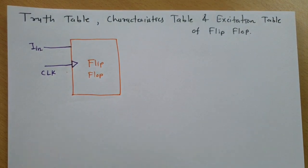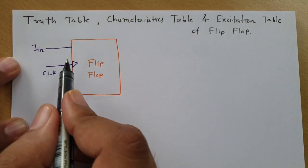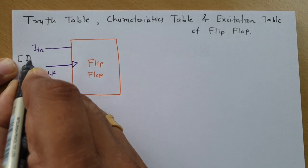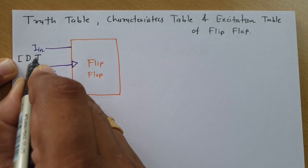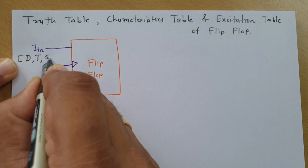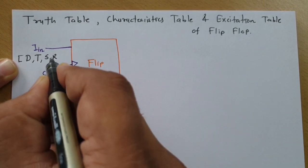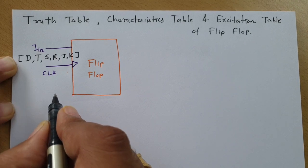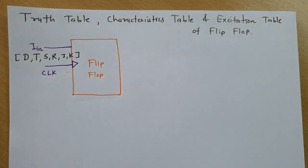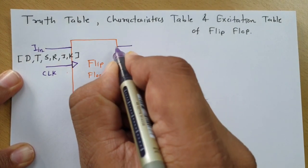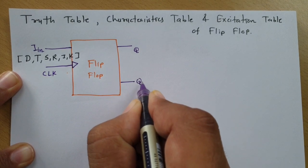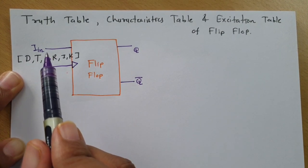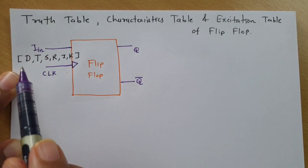When I explain different flip-flops, there will be different inputs for each type. For D flip-flop, there will be a D input. For T flip-flop, there will be a T input. For SR flip-flop, there will be two inputs S and R. For JK flip-flop, there will be two inputs J and K. There will be two different outputs: one is Q and the second is Q-bar. So clock, Q, and Q-bar remain the same for all flip-flops, while the input terminal changes per flip-flop type.